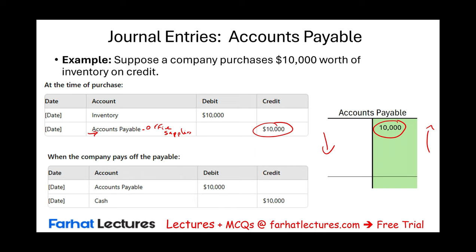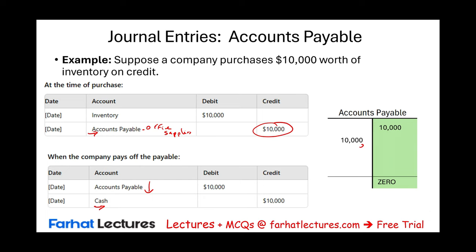Eventually the company will pay off this liability. When they do, they credit Cash $10,000 and debit Accounts Payable $10,000, reducing Accounts Payable to zero. The goal is to eventually get your balance down to zero — to pay off your liability. If they only paid $6,000, the remaining balance would be $4,000. The goal is to have your liabilities down to zero — that's a good thing.